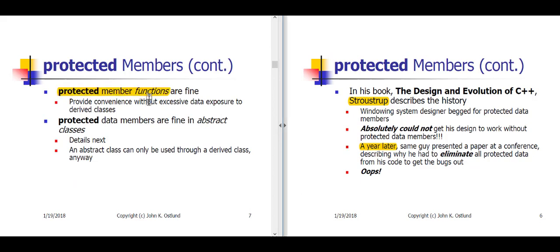Now, protected member functions — which are functions within a class that only derived classes can call — are fine, because these member functions will control access to the underlying private data of the base class. You can also make an argument that protected data members are okay in what are called abstract classes. But to be absolutely clear, in this course: public data members that are not const, and protected data members in a class that is not abstract, are forbidden and are not to be used. No public data members other than const; no protected data members other than in abstract classes.